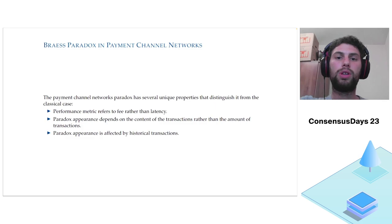Before we see an example, we show that the Paradox we present differs from the classical Paradox and has some unique properties. First, the performance metric we measure refers to fee rather than latency. Additionally, the Paradox does not depend on the amount of transactions or the amount of users in the network. Rather, it depends on the content of these transactions. Finally, while the classic Paradox is not affected by the amount of drivers that used the roads a day earlier, the payment channel Paradox is affected by previous transactions since they changed the liquidity of the channels. The Paradox is affected by history, transaction history.